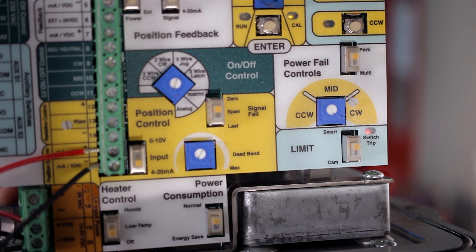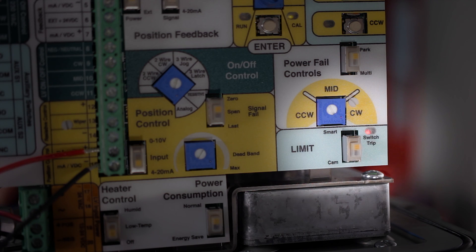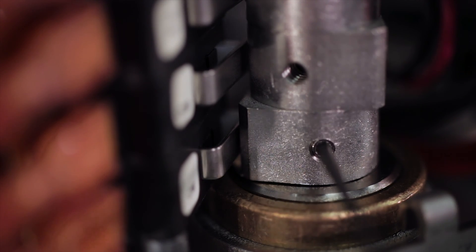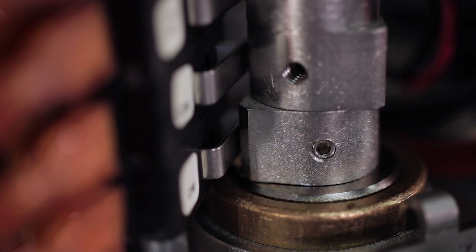If the cams are making contact with the limit switches the switch trip LED light will appear. Loosen the set screw on the cam and retighten in a spot where the valve can have full travel without making contact with the limit switches.